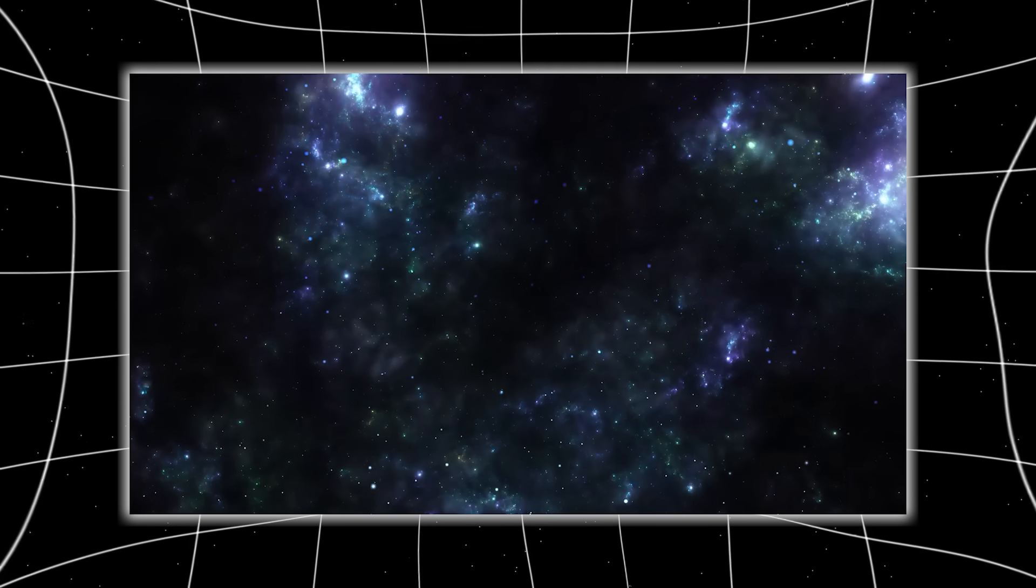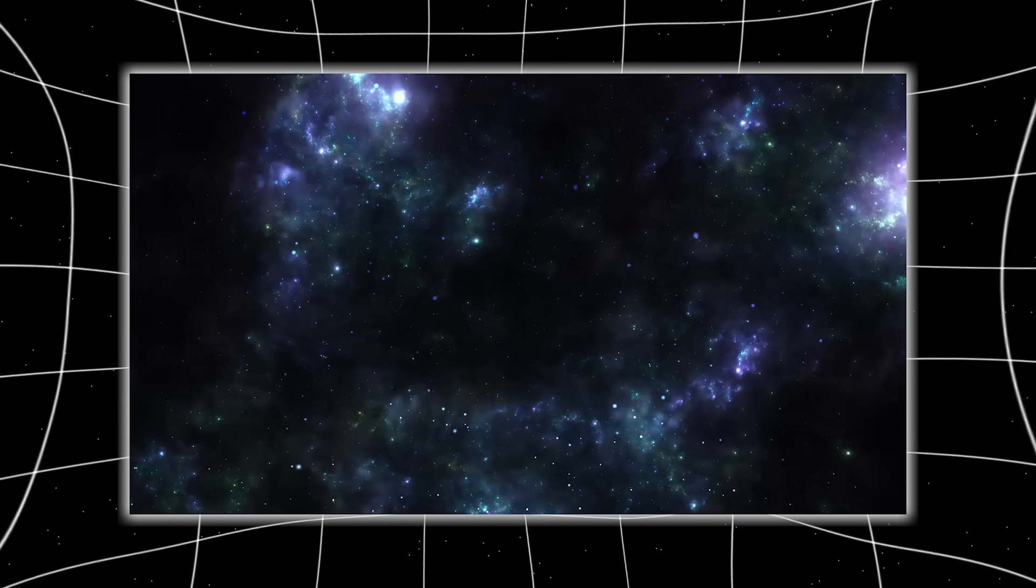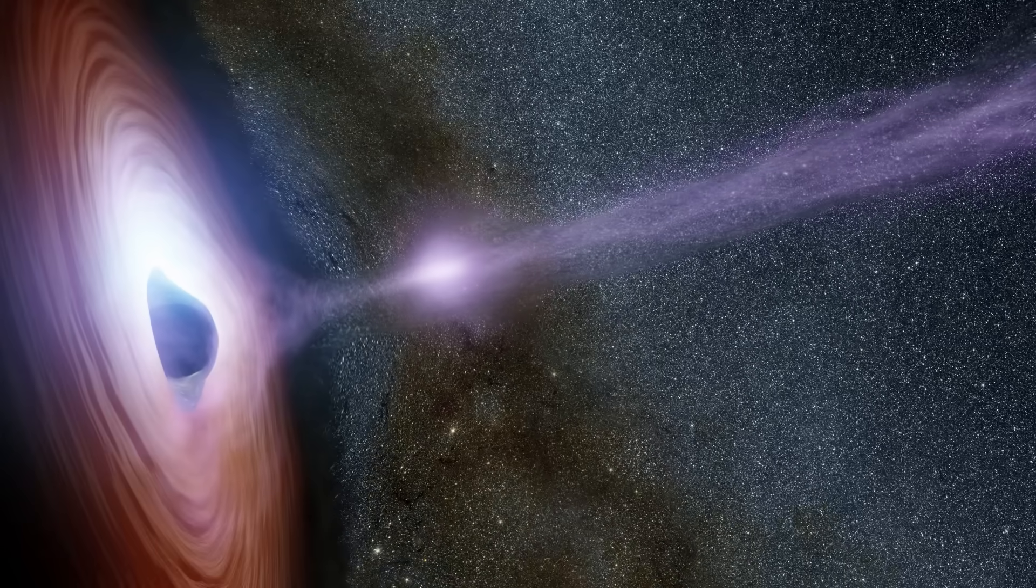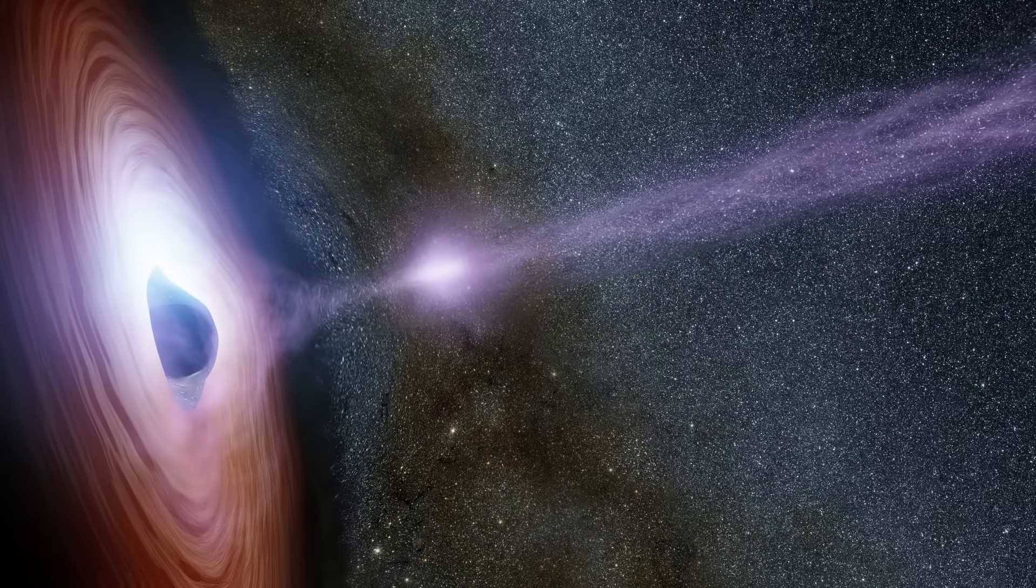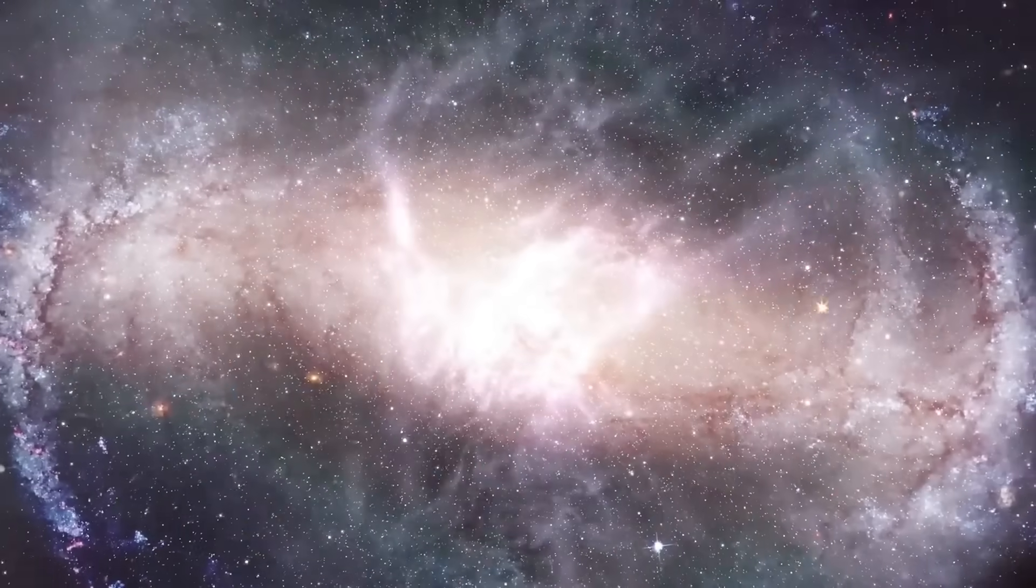Its gravity field was so extreme that it bent light across hundreds of thousands of light years, creating a halo that seemed to project the shapes of entire galaxies. But the strangest part was what it reflected back. When Webb looked into it, it saw us. At first, scientists dismissed it as a data artifact, a mirror reflection caused by Webb's secondary optics. But repeated observations confirmed it.